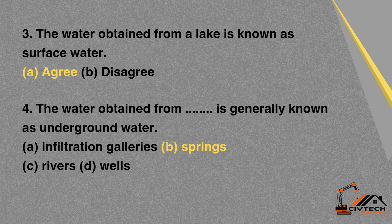MCQ 4: The water obtained from which source is generally known as underground water? A. Infiltration galleries. B. Springs. C. Rivers. D. Wells. Correct option: B. Springs.